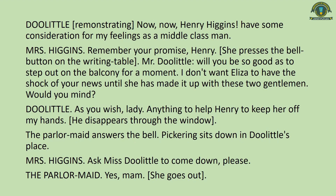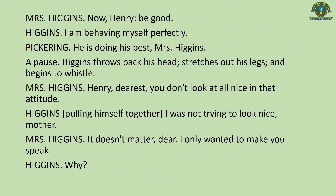Doolittle remonstrates: 'Now, now, Henry Higgins, have some consideration for my feelings as a middle-class man.' Mrs. Higgins reminds Henry of his promise and presses the bell. She asks Doolittle to step out on the balcony so that Eliza does not have the shock of his news until she has made it up with 'these two gentlemen.' Doolittle agrees: 'Anything to help Henry to keep her off my hands.' The parlour maid answers the bell and is sent to ask Miss Doolittle to come down. Higgins says he is 'behaving perfectly.'